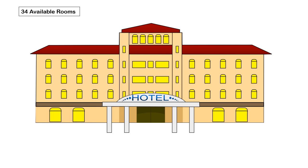The first aspect we need to understand is how many rooms are available. In our fictitious hotel here we have 35 rooms — you can see if you count the little windows. However, one of our rooms is out of commission; perhaps it's being renovated. So then we have 34 available rooms.